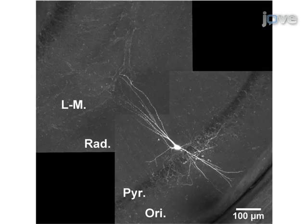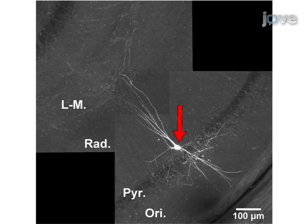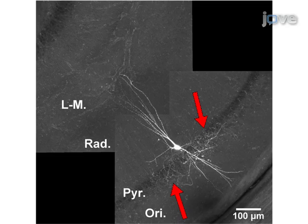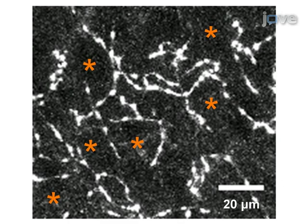A fast-spiking interneuron shown at 20x magnification had a somata located at the border of the stratum radiatum and pyramidalae of the CA1 area, with dendrites running vertically and spanning all layers, whilst the majority of the axon is found in and around the cell body layer, as typical for basket cells. A 60x magnification image shows typical baskets of axons forming around putative CA1 pyramidal cell somata, which are marked by the orange asterisks.